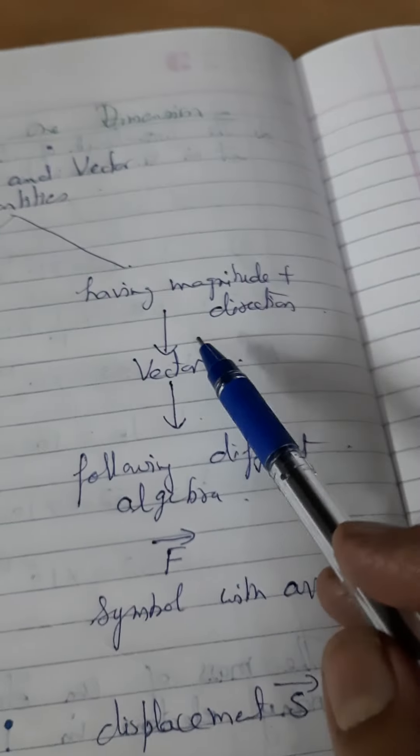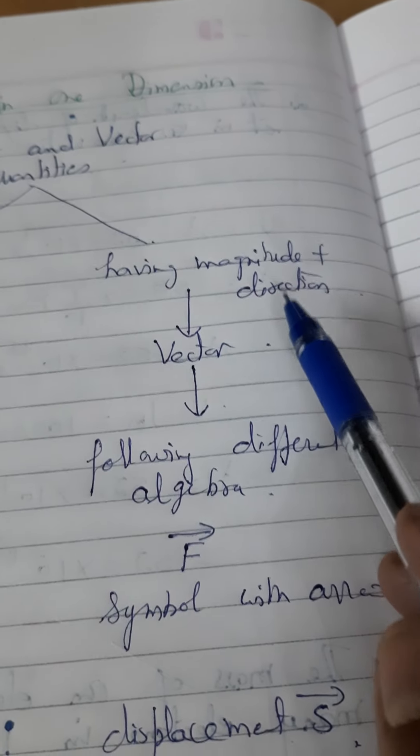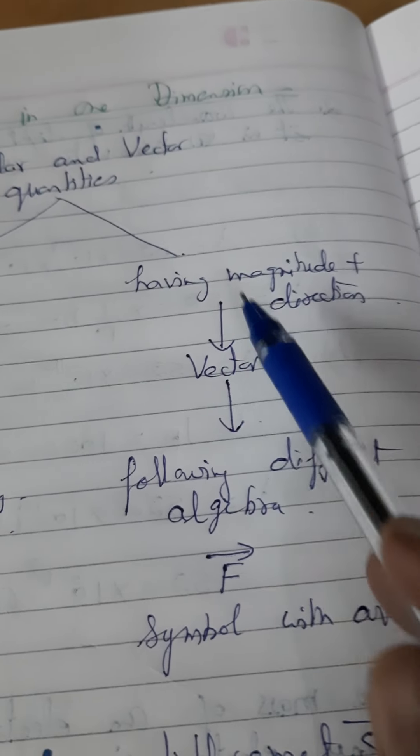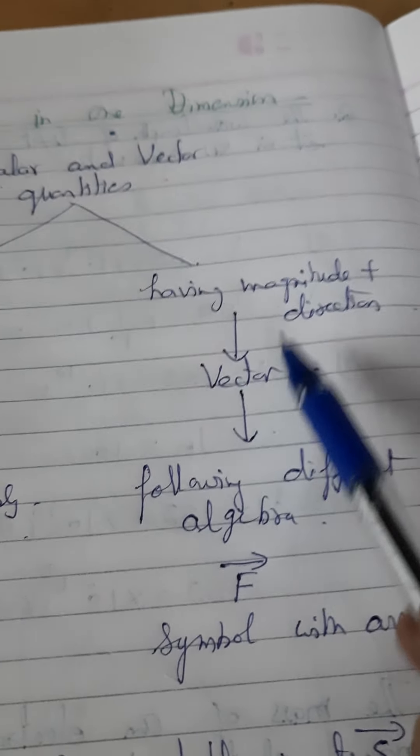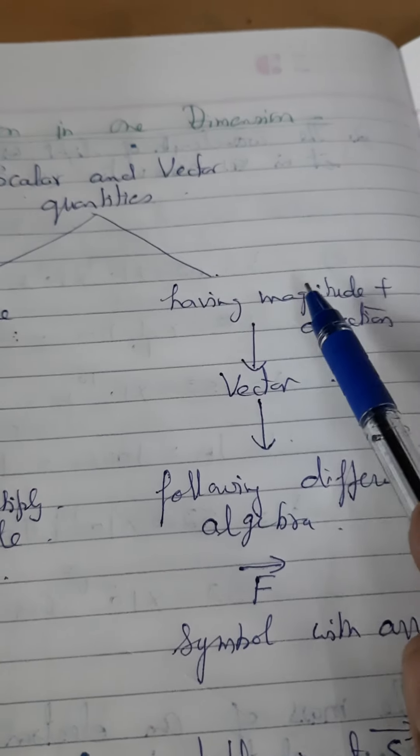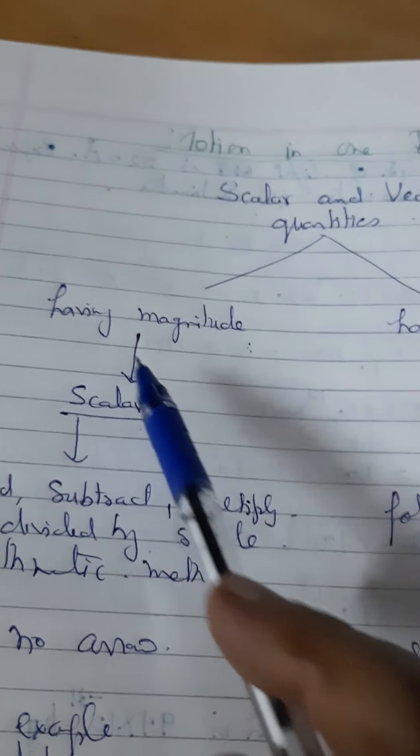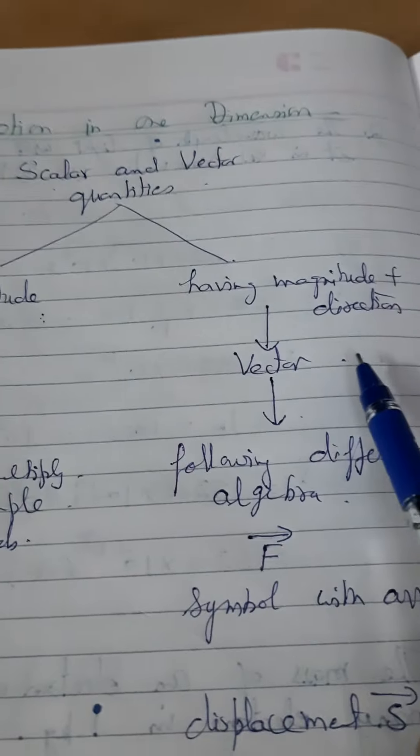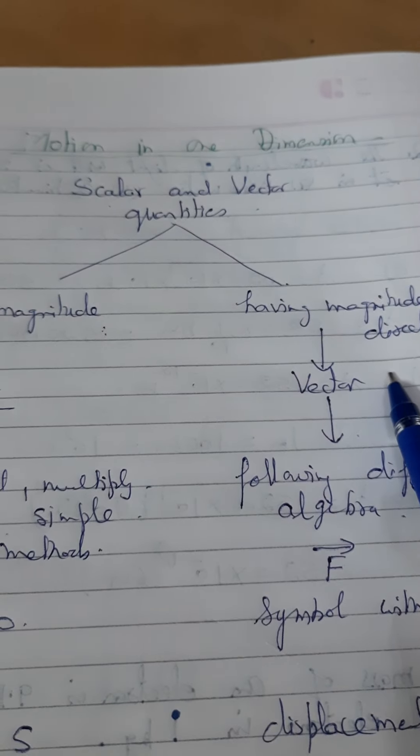But those having magnitude as well as direction, such type is known as vector quantities. If you add the direction to the magnitude, then the scalar quantity is converted into your vector quantity.